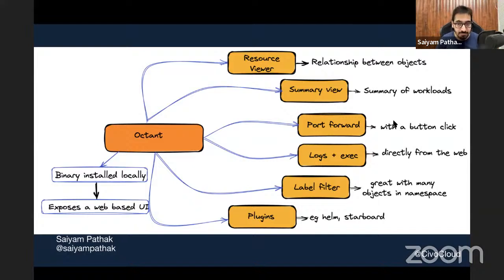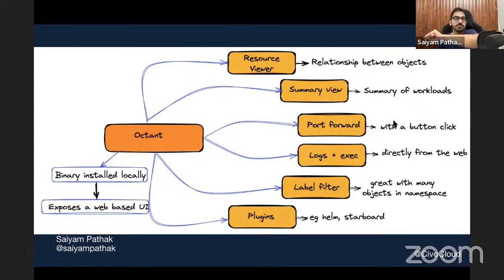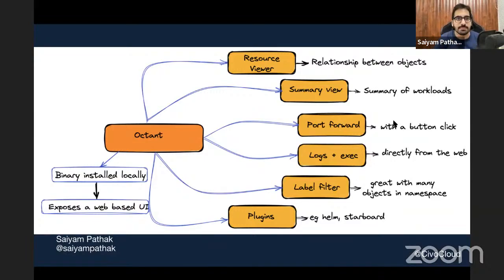Octant has a very interesting plugin support feature. There are different plugins that people have developed - for example a Helm plugin and a Starboard plugin (Starboard is for security scanning). If you download plain Octant and run it, you won't see Helm or Starboard by default. But if you place the plugin binary in the home/config/octant/plugins folder, those plugins will be available. That is pretty neat.